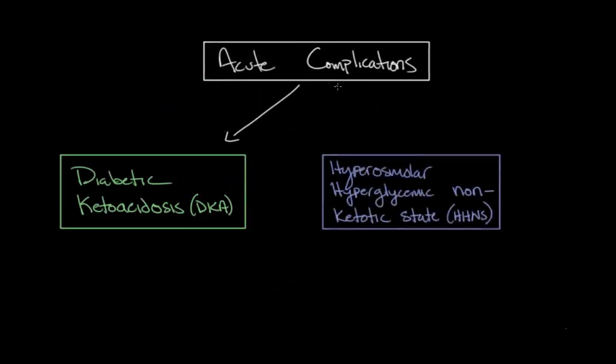But there are also a couple of very important acute complications of diabetes mellitus. These are known as diabetic ketoacidosis, or DKA for short, and hyperosmolar hyperglycemic non-ketotic state, or HHNS for short. Unfortunately, these acute complications can be very serious, especially HHNS, which has a mortality rate of 8 to 20%.